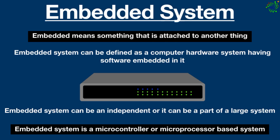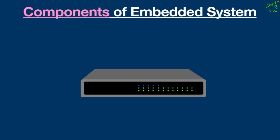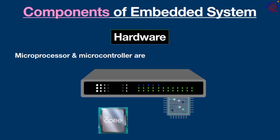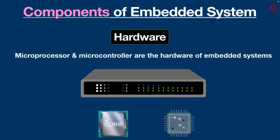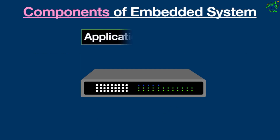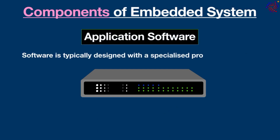Embedded systems have three main components. First, hardware — microprocessors and microcontrollers are the hardware of embedded systems. They typically include a CPU connected to other basic computing devices such as memory chips, power supplies, and LCD displays. Second, application software — embedded system software is typically designed with specialized programming tools that enable the machines to work. Application software allows users to perform a variety of tasks that can run on an embedded system by simply changing the installed code.